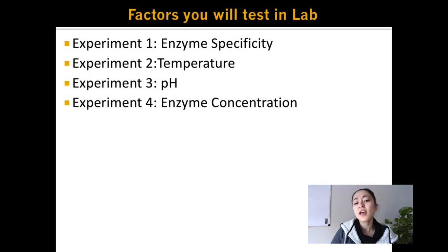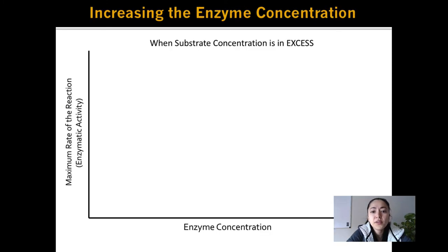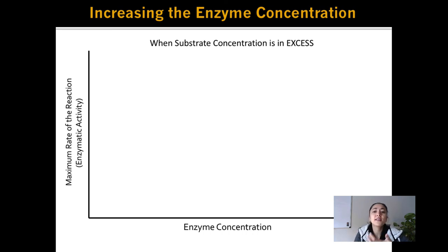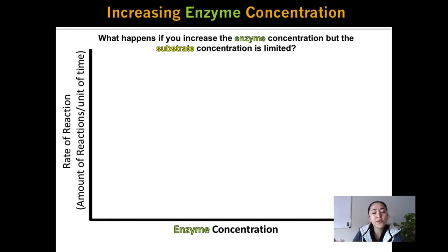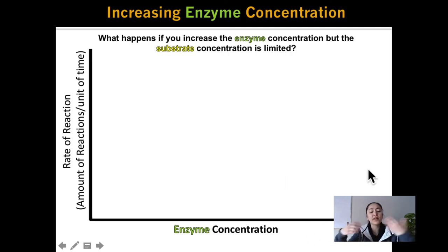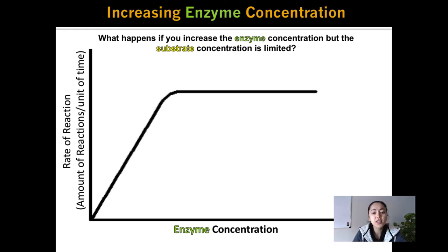What do you think will be the effect of increasing the enzyme concentration on the rate of the reaction? As you increase the enzyme concentration, you're making more active sites available for the hydrogen peroxide. If the hydrogen peroxide concentration is in excess, we would expect the rate of the reaction to just increase as we increase the amount of enzyme present. However, what do you think would happen if the substrate concentration was actually limited? Do you think the reaction rate would continue to increase?